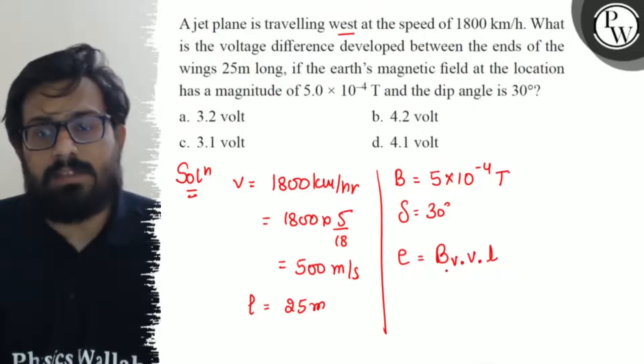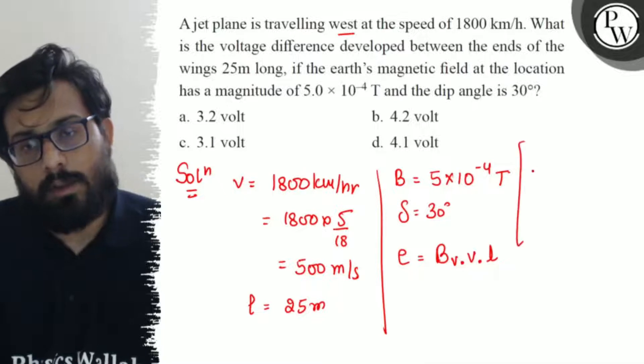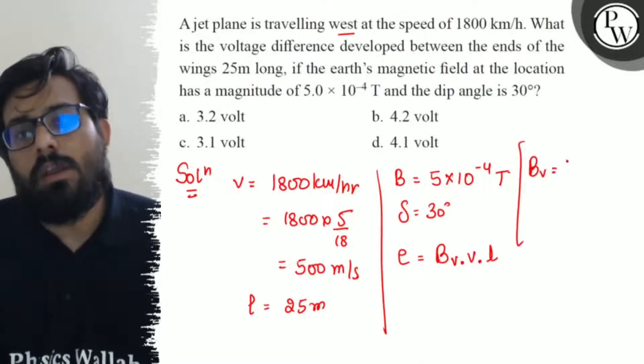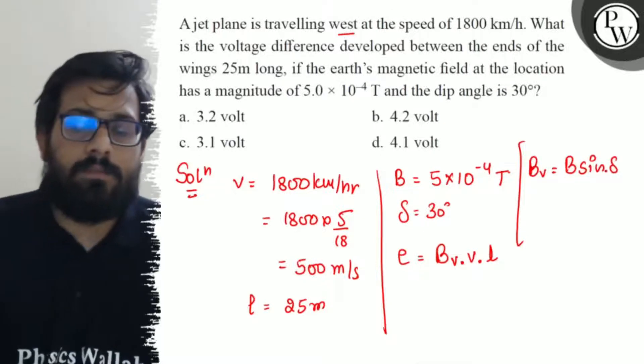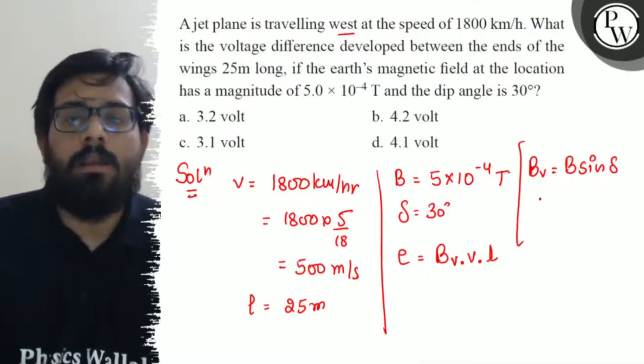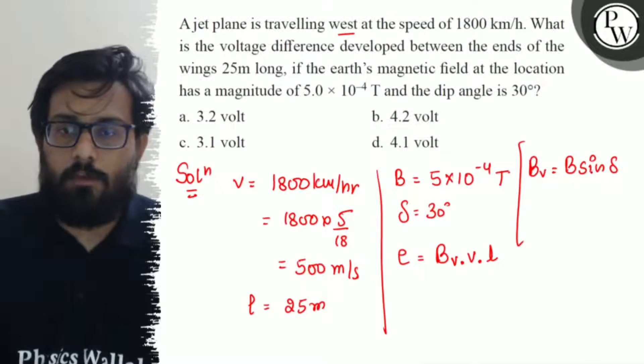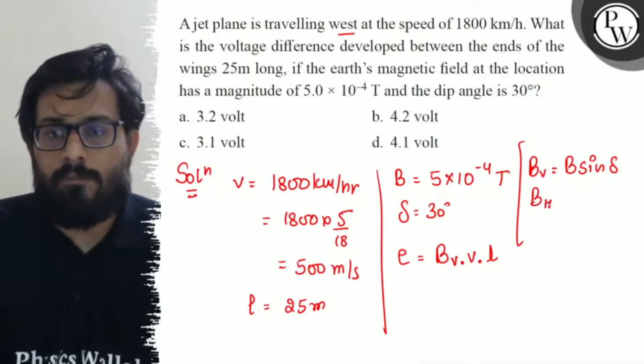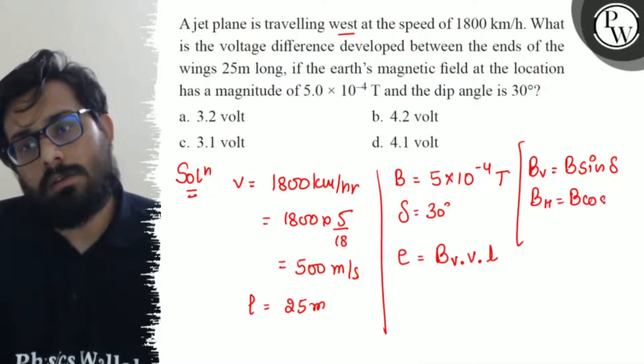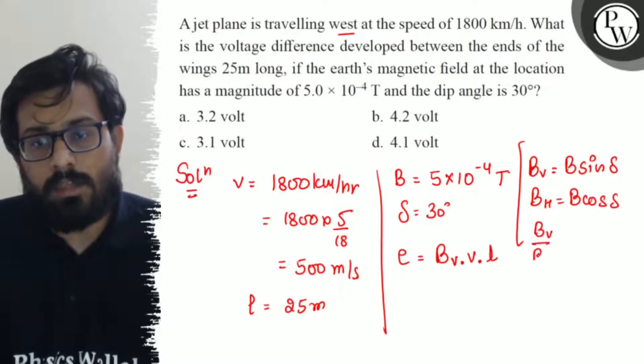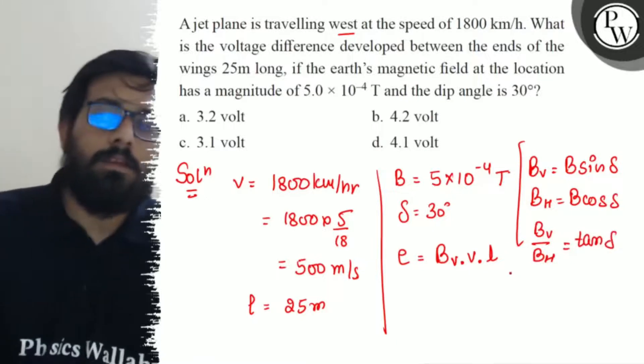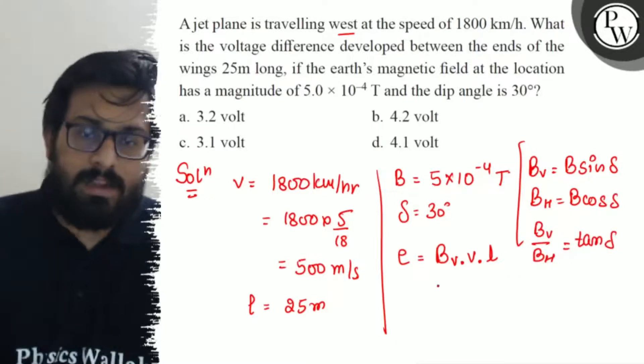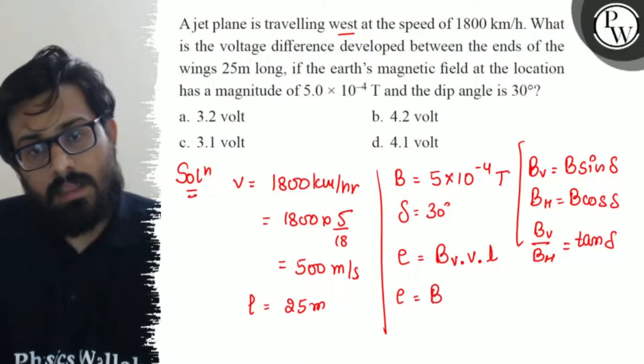So BV is actually the vertical component of the earth's magnetic field, which is equal to B sine del.